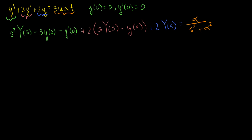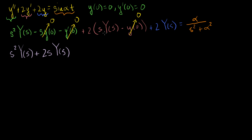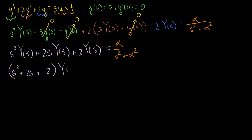Now we want to separate out the Y(s) terms, and we can get rid of the initial conditions since y(0) and y'(0) are both 0. Those terms drop out, and our expression becomes s²·Y(s) plus 2s·Y(s) plus 2·Y(s), equal to alpha over s² plus alpha².